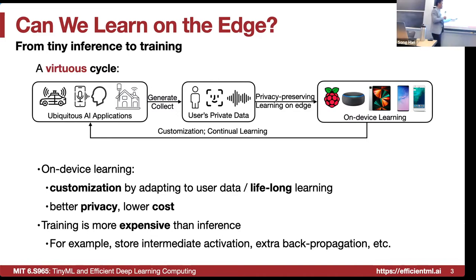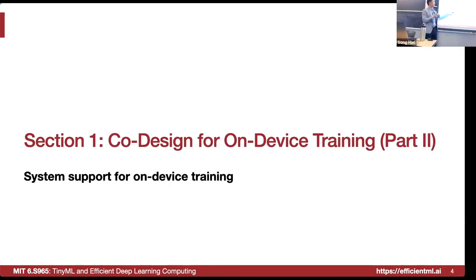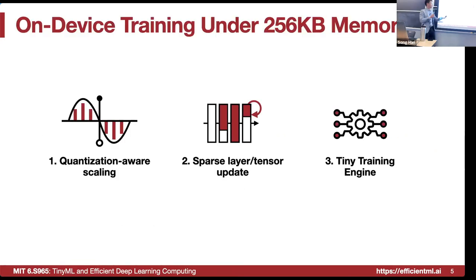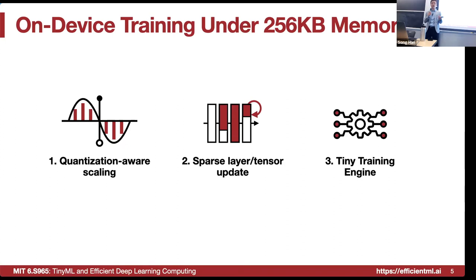Training is much more expensive than inference due to activations and batch size. How do we conquer those problems? We first discussed co-design for training — starting with the algorithm side and then the system side. In last lecture, we covered two parts: first, using quantization-aware scaling to enable quantized training using only 8-bit. We analyzed the difference between weight and gradient and found that in quantized training, due to the scaling factor, there is a very large weight but a very tiny gradient. Therefore we need a scaling factor to compensate. This is hyperparameter-free and very easy to implement — just one line of code.